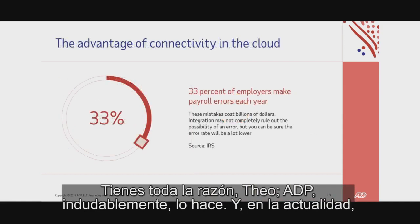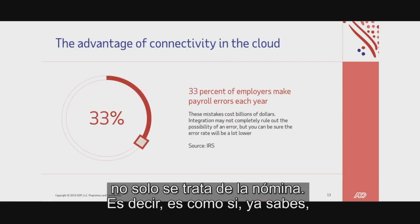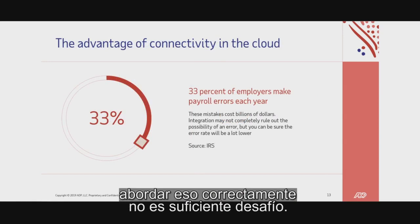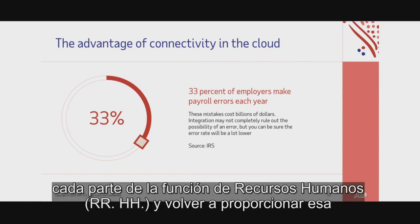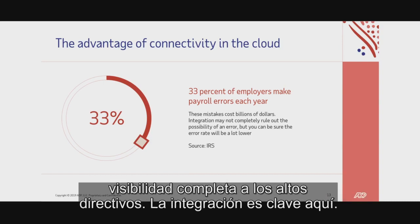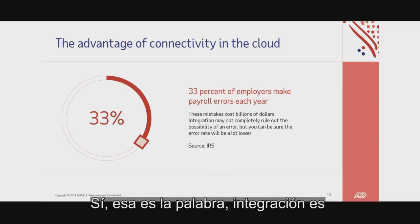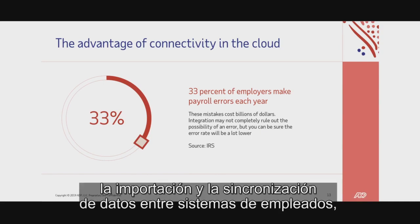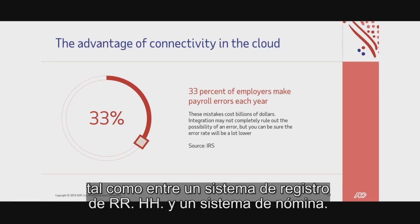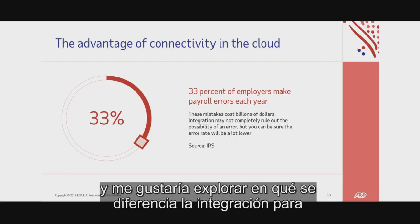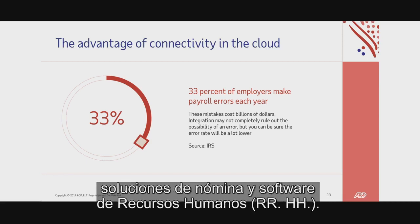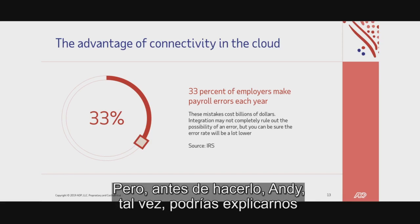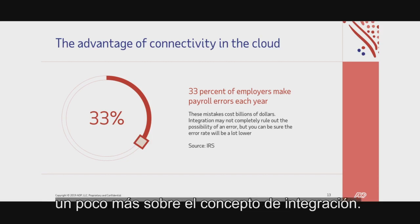These days, it's not just about payroll. Organizations now need the ability to access accurate data from every part of the HR function and provide complete visibility back into the C-suite. Integration is key here — the importing and synchronization of data between employee systems, such as between an HR system of record and a payroll system. This is critical. Andy, could you give us a little more about the integration concept? Integrating employee data across diverse systems like HR, payroll, and time and attendance applications promises everything from better, faster reporting to help with compliance. Companies view it as a way of cutting admin time and costs, avoiding duplicating tasks, and ultimately reducing payroll errors associated with manual data entry. There are two approaches: shared file integration or real-time integration. Shared file integration is ideally suited for batch processing — it offers a snapshot of data at a specific time to be shared with another system. It's not real-time data sharing, and typically on-premise solutions would use this approach.